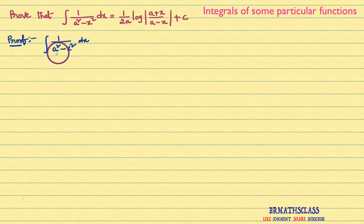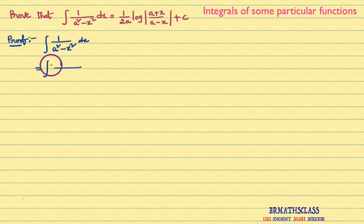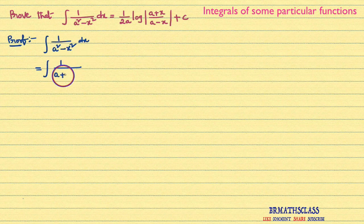Integral of 1 divided by a squared minus x squared dx. You observe this — it looks like a squared minus b squared. What is the formula for a squared minus b squared? It is a plus b into a minus b. So a squared minus x squared can be written as a plus x into a minus x.